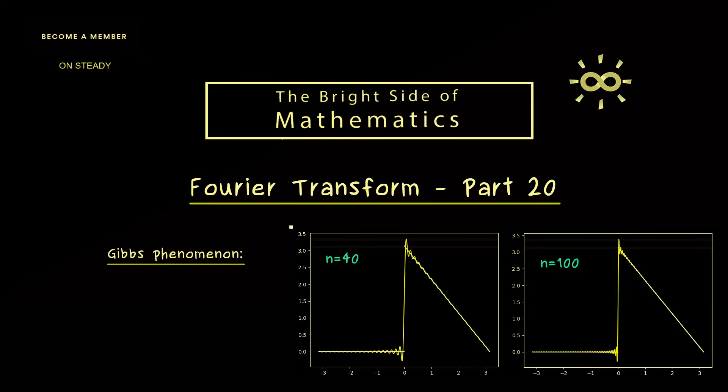And this is what we call Gibbs Phenomenon. We always have overshooting no matter how large our n is. Please note this is not a contradiction to the pointwise convergence we definitely have at all the points around the jump point.